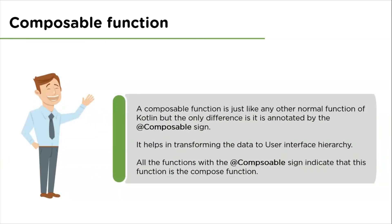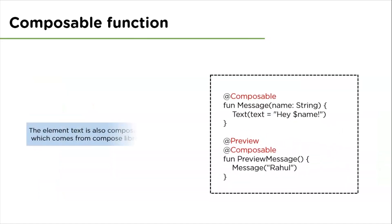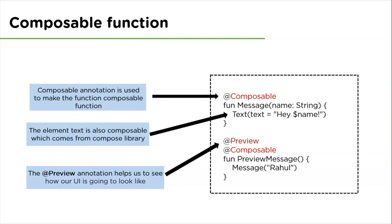A Composable function is just like any other normal function of Kotlin, but the only difference is it is annotated by the Composable sign. It helps in transforming data to the user interface hierarchy. All the functions with the Composable sign indicate that this is a Compose function, and the sign tells the Compose compiler that this function is intended to convert data into user interface. They can only be called from other Composable functions.